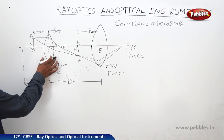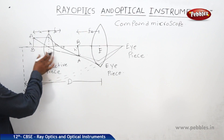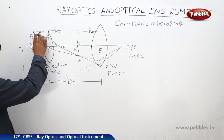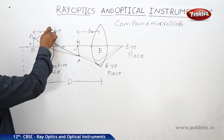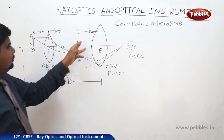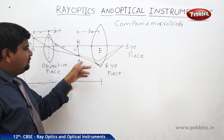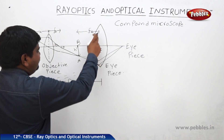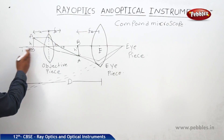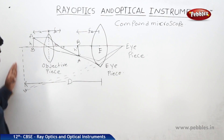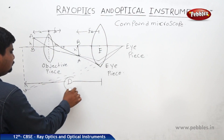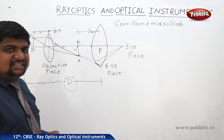Let me check some dimensions. This is the objective piece — one convex lens. In front of it, one object of height h is placed at a distance u. From the middle of the aperture of this objective lens to the image formation, we have the distance F0. This image becomes the virtual object for the eyepiece, which has focal length FE. The distance from this image to the aperture of the eyepiece is called d, which is equal to the least distance of distinct vision.